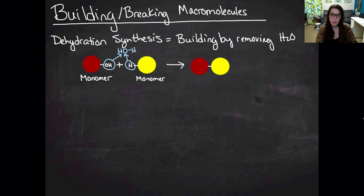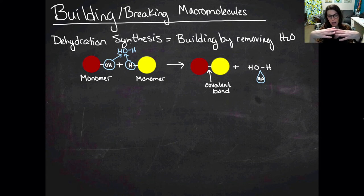So I end up with my two remaining monomers bound to each other. And then I end up with HOH, which is water, right? And the red and the yellow monomer are now bound together through a covalent bond. They're sharing electrons because they've lost the electrons from the hydroxyl and the hydrogen group. So that's dehydration synthesis.